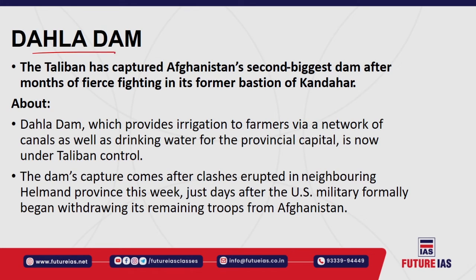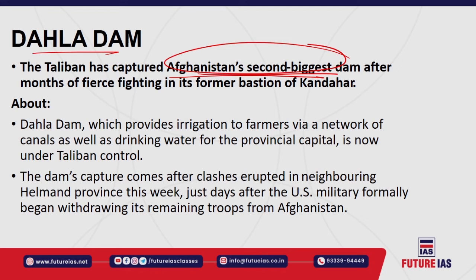The Dahla Dam, also known as the Arghandab Dam, is Afghanistan's second biggest dam. It has recently been in the news because the Taliban — a terrorist organization — captured it. The dam is located in Kandahar province in southern Afghanistan. Kandahar is Afghanistan's second largest city after Kabul, located on the banks of the Arghandab River at an elevation of around 1000 meters.